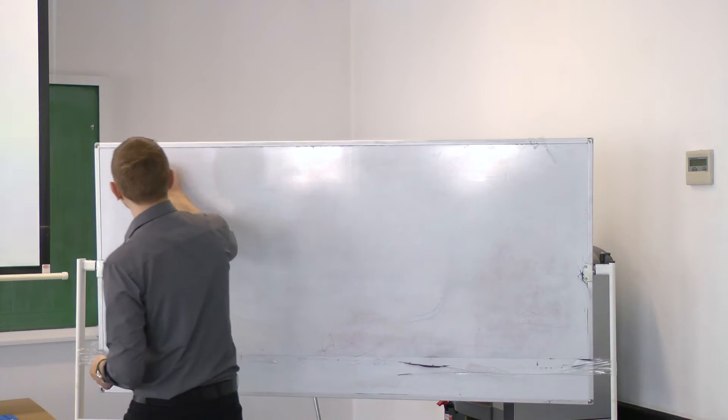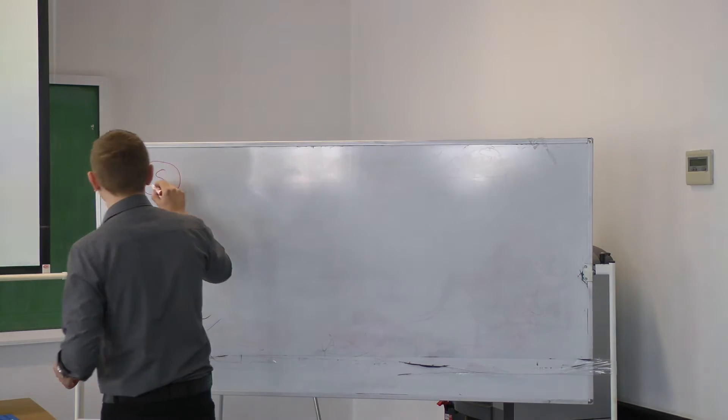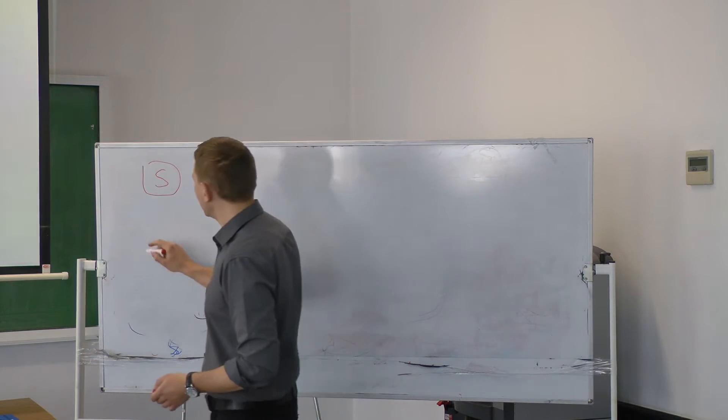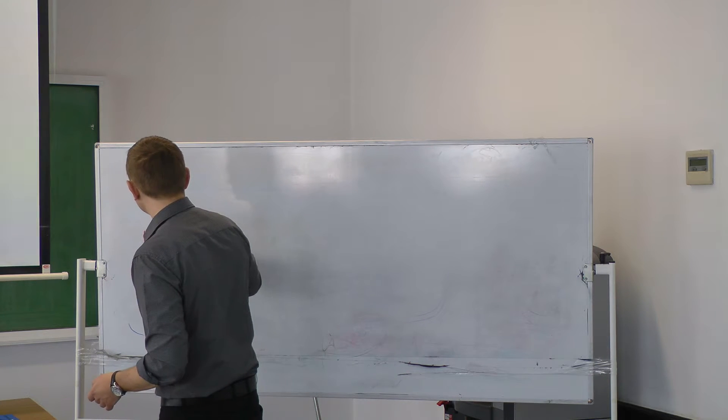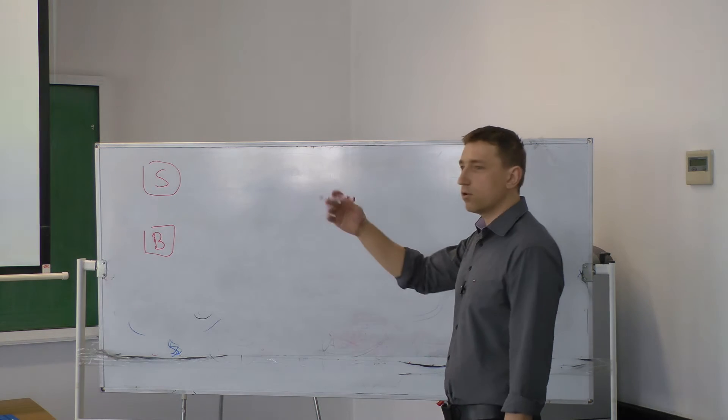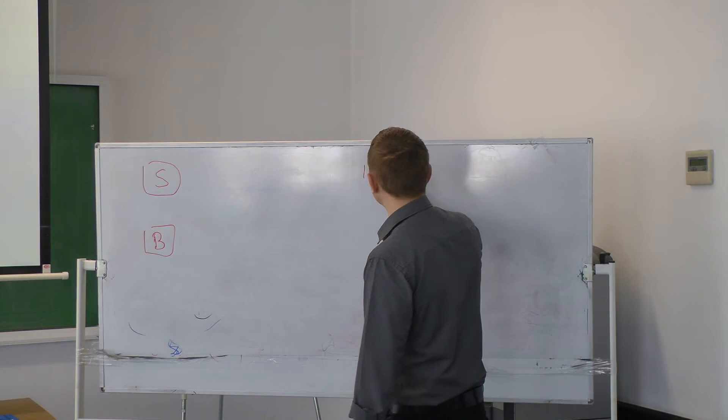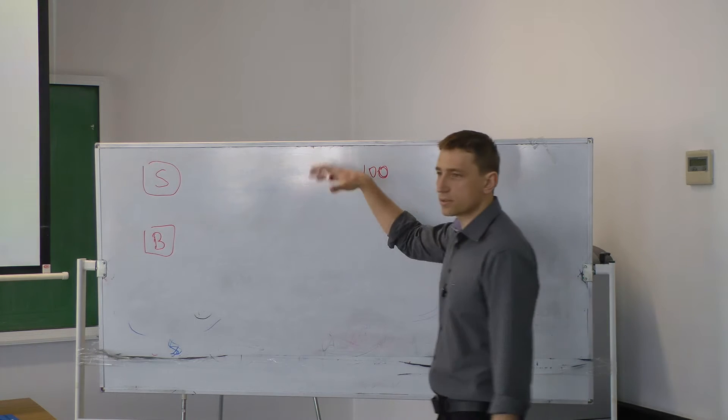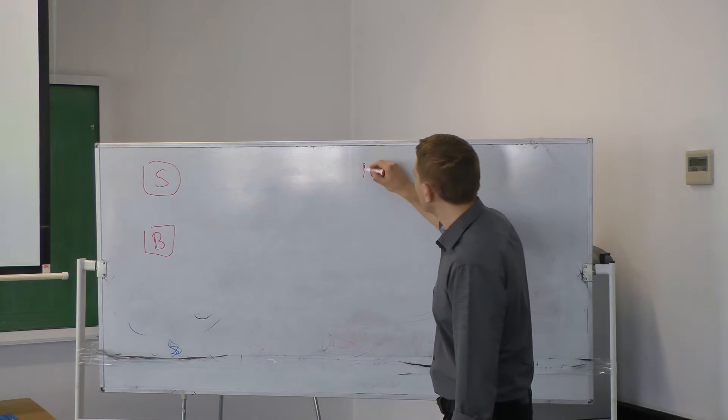The problem is like this. So here I am. This is the seller of the insurance. This is my company. Here is the buyer. And my business proposal will be like this: If you get divorced, I will pay you 100 units. Could be thousands, whatever. 100.